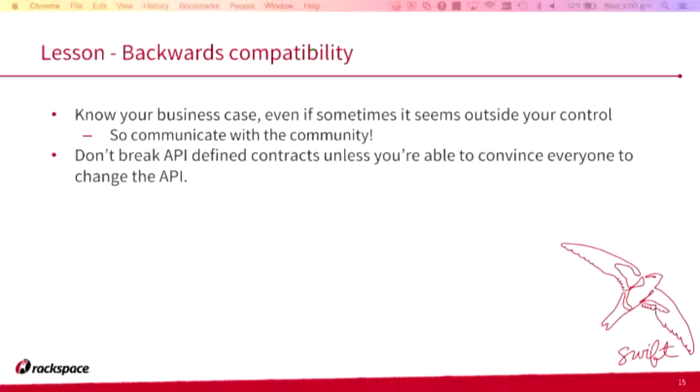Lesson one: backwards compatibility. It sounds obvious — know your business case. But in an open source project that can feel outside your control because you don't know what custom middleware people have written. Communicating with the community is important. And don't break API-defined contracts unless you can convince everyone to change the API — and that doesn't happen.